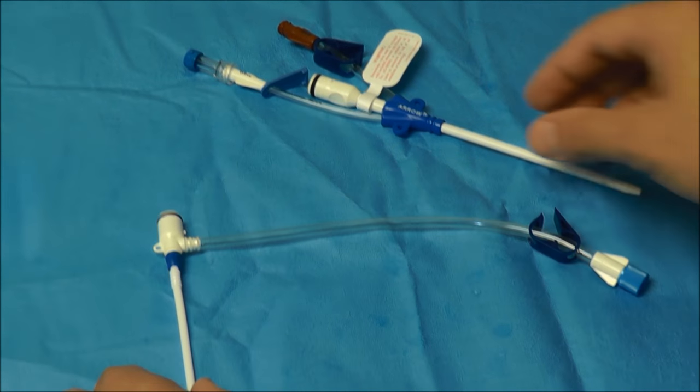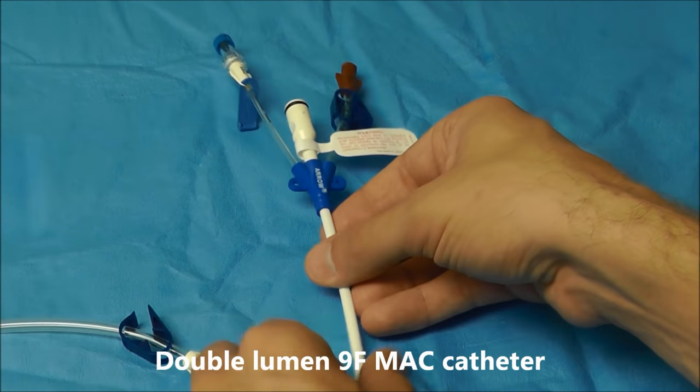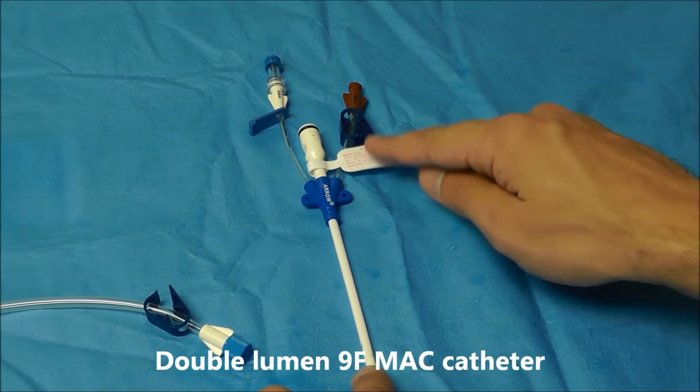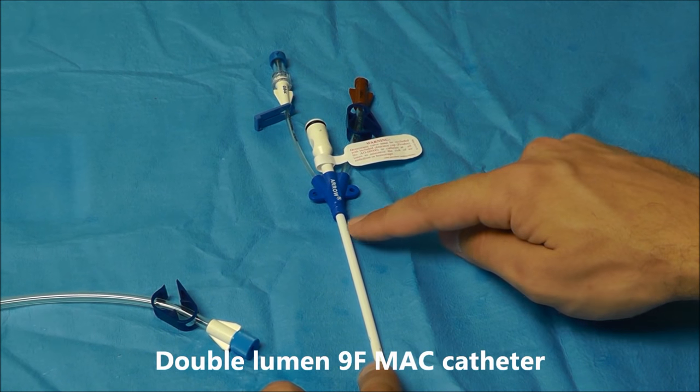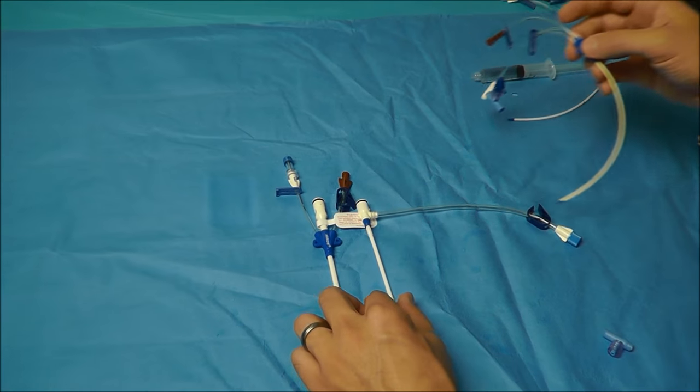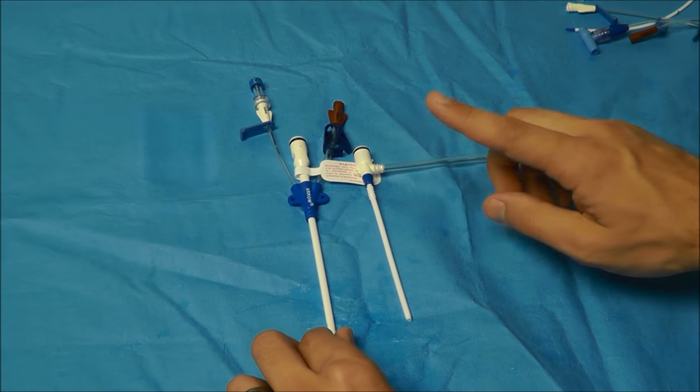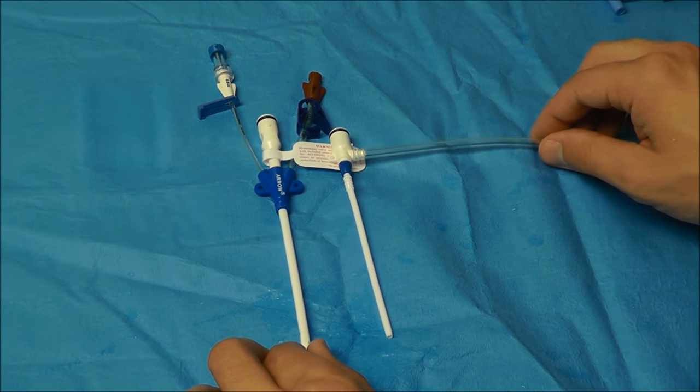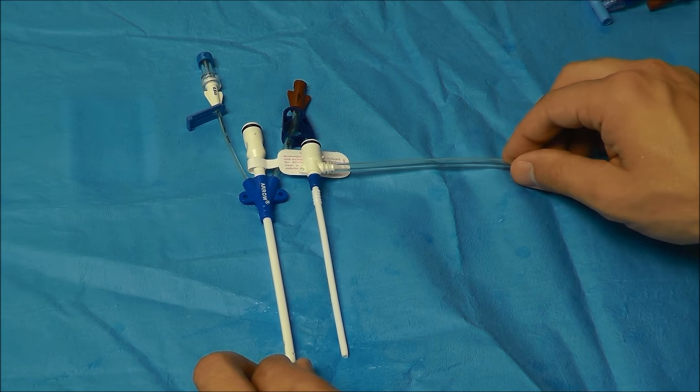It has one lumen here, and the other example is the 9 French double lumen MAC catheter. The advantages to these catheters is number one, you get faster fluid infusion because they have a larger diameter lumen.